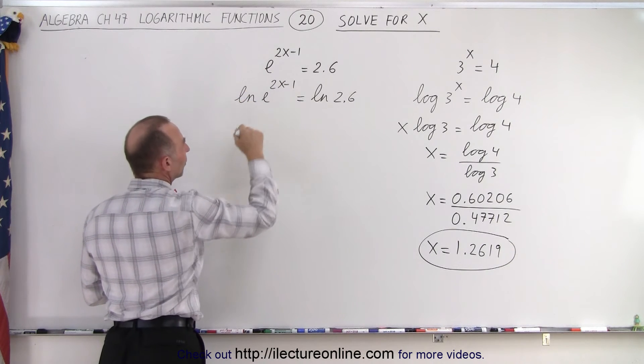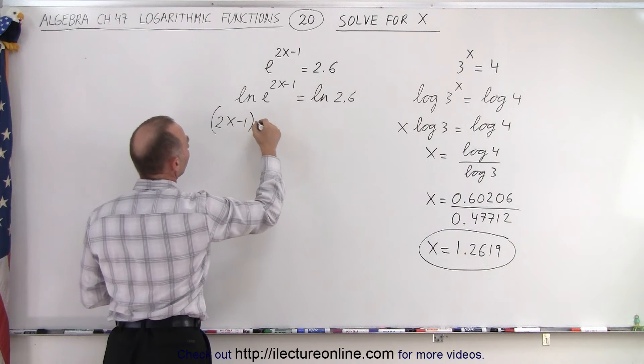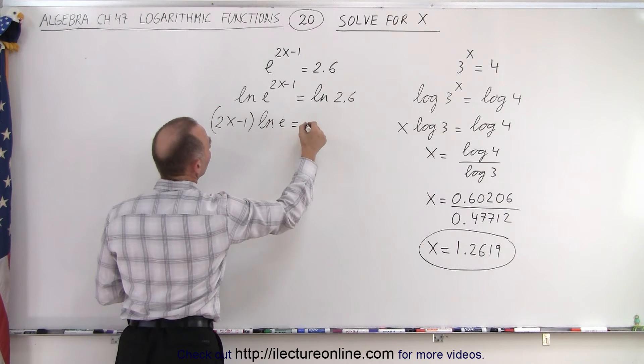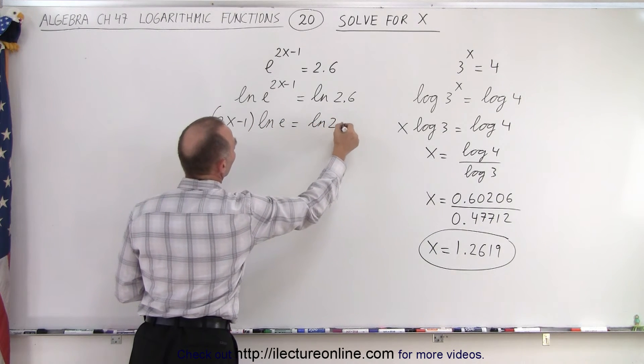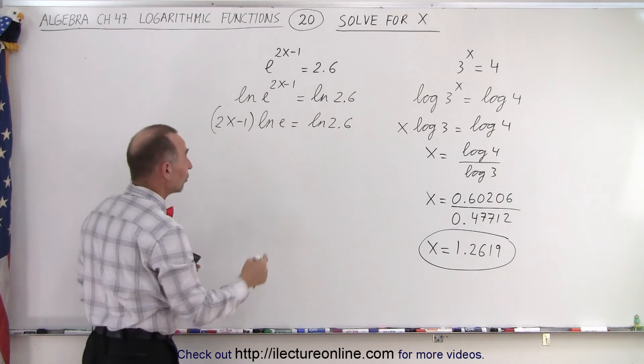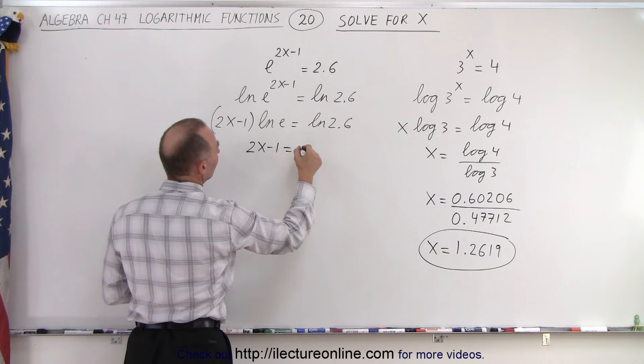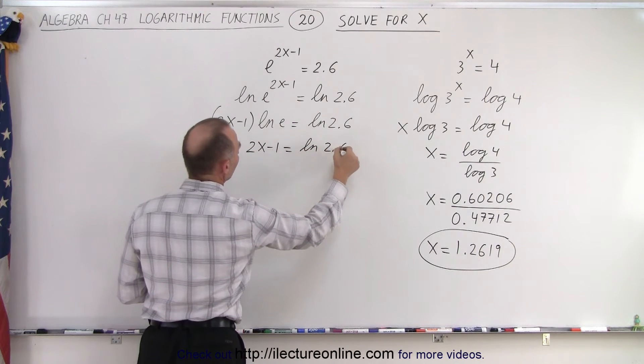Here again I'll use the power rule: (2x-1)·ln(e) = ln(2.6). Remember, the natural log is log base e, so ln(e) = 1. This becomes 2x - 1 = ln(2.6).